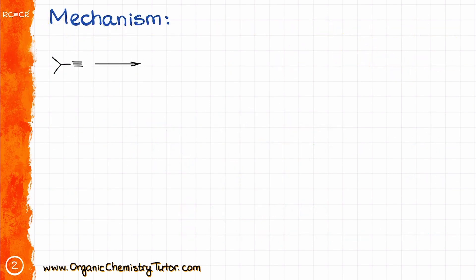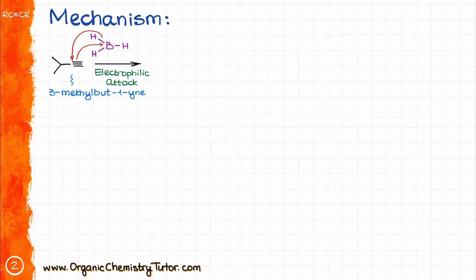Hydroboration of alkynes starts with an alkyne — a 3-methyl-but-1-yne to be precise for this particular example. In the first step of this reaction, we are going to perform an electrophilic attack from the borane on the pi bond. This is the same style of electrophilic attack that we saw in the hydroboration of alkenes. At the same time, one of our hydrogens is going to jump on the carbon, and this gives us a product looking like this.